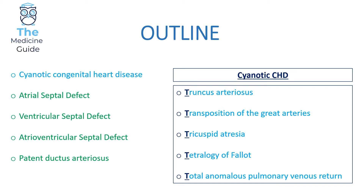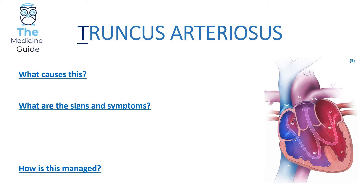Acyanotic congenital heart diseases cause the child to appear pink and perfused, as opposed to cyanosed where they appear blue. The high yield acyanotic conditions include Atrial Septal Defect, Ventricular Septal Defect, Atrioventricular Septal Defect, and Patent Ductus Arteriosus.